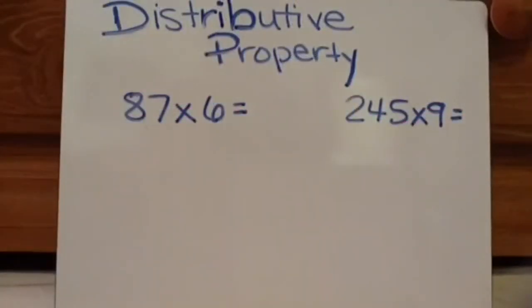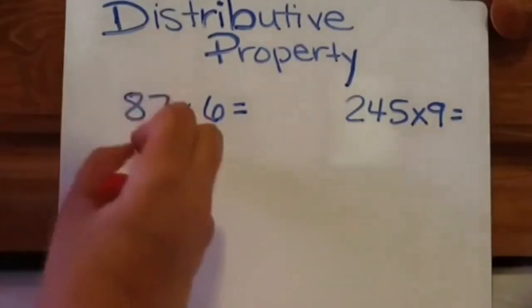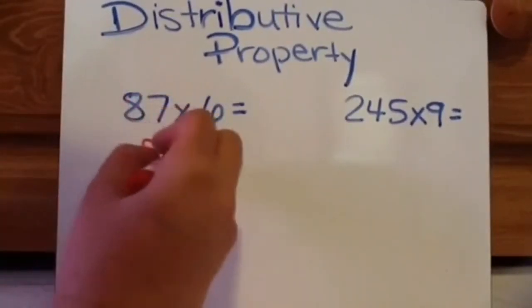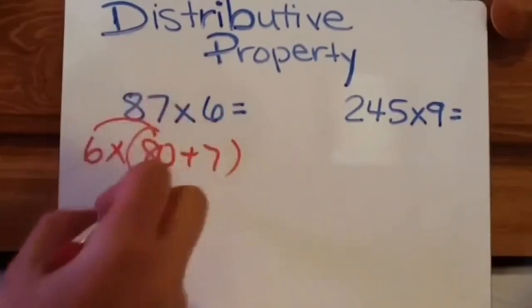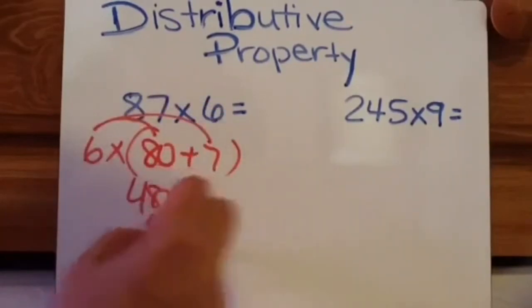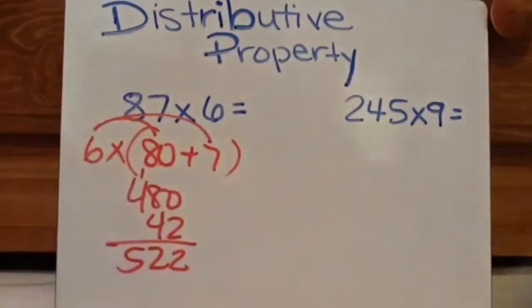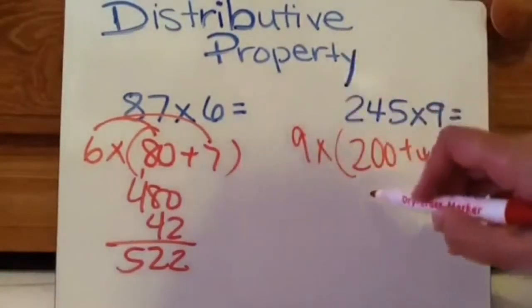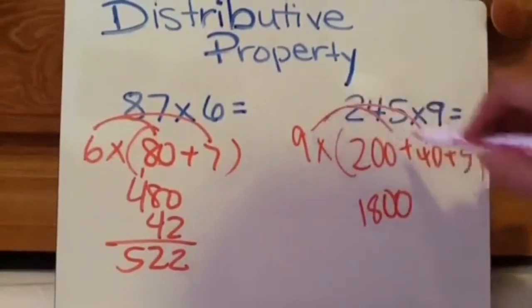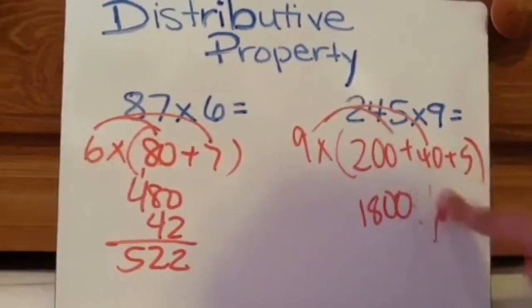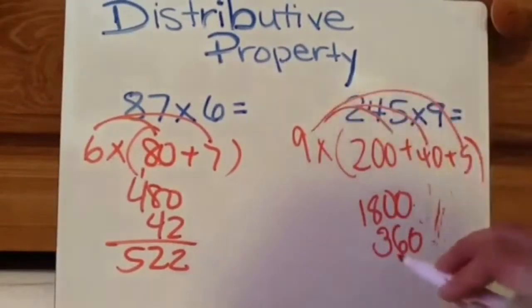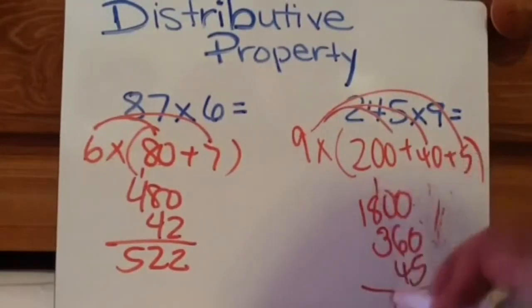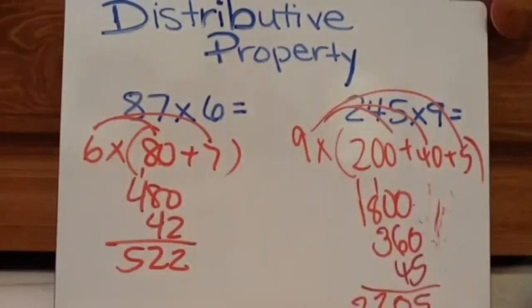These are the last two that I want you to do and check with standard algorithm. And then we're going to move on to partial products. So 87 times 6. So this would be 80 plus 7 times 6. 6 times 8 is 480. 6 times 7 is 42. I got 522 as my answer. This here is 200 plus 40 plus 5 times 9. 9 times 2 is 1,800. 9 times 40 is 360. And then 9 times 5 is 45. 2,205.